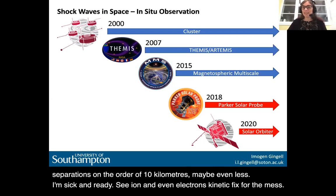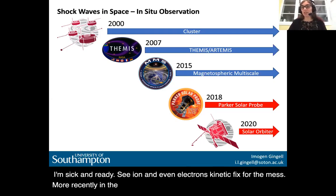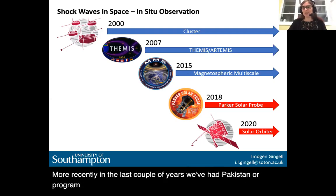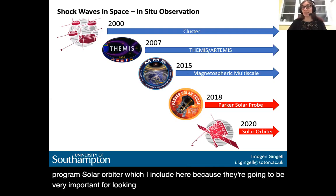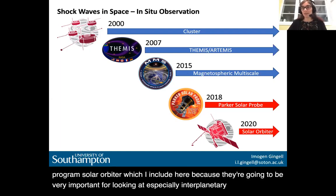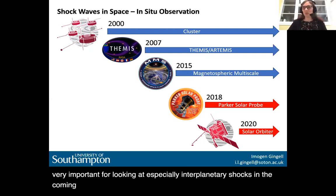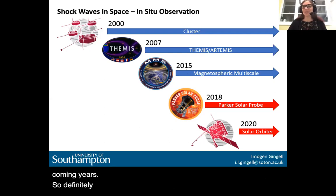More recently, in the last couple of years, we've had Parker Solar Probe and Solar Orbiter, which are going to be very important for looking at especially interplanetary shocks in the coming years — definitely a watch-this-space on these two missions.